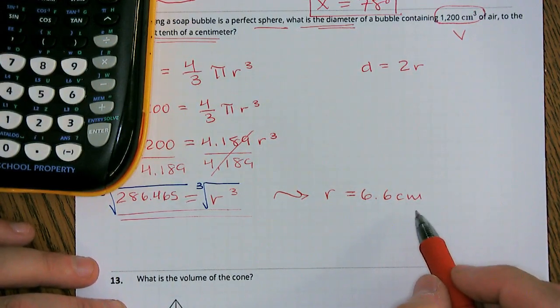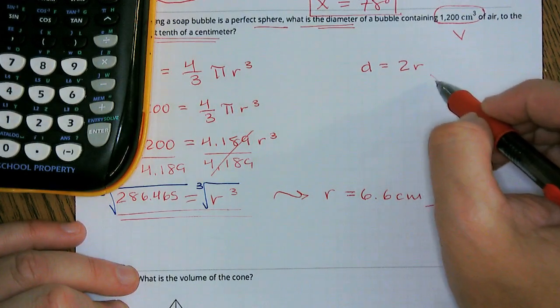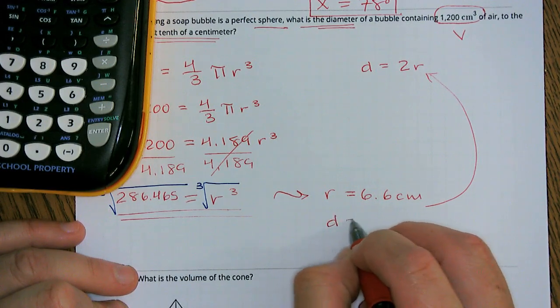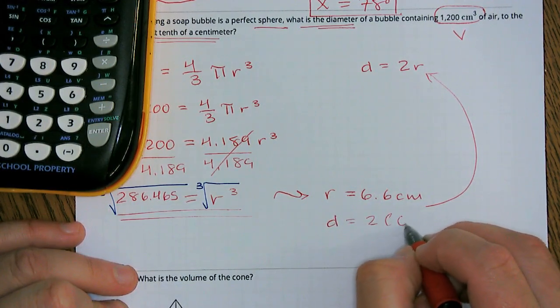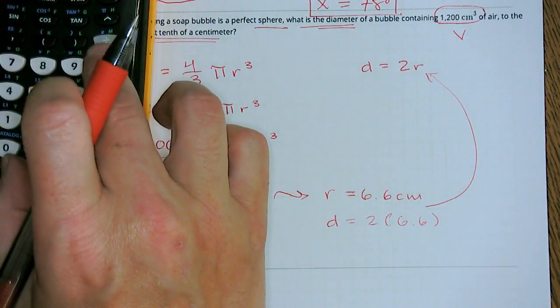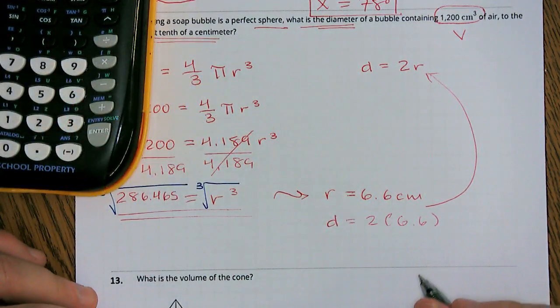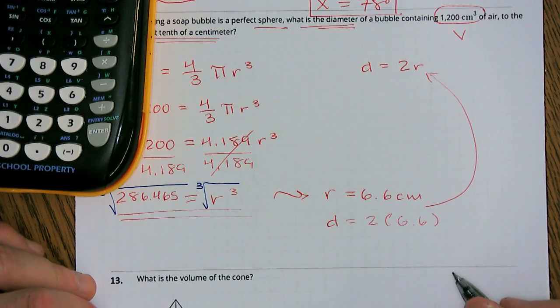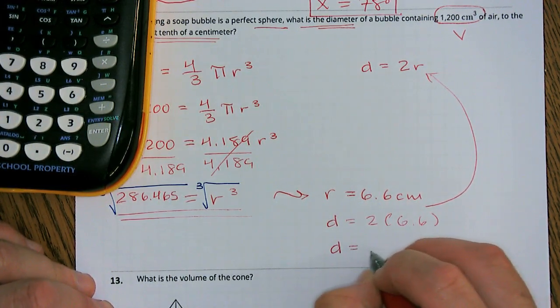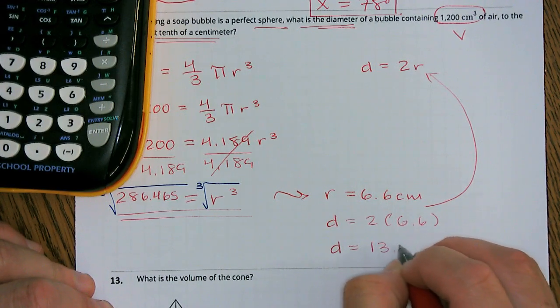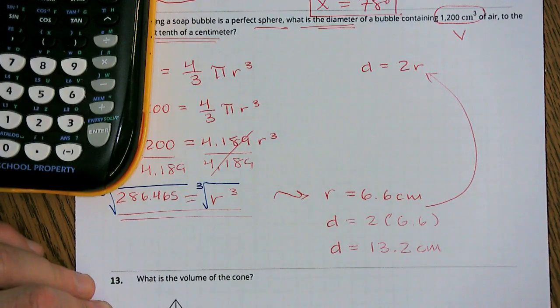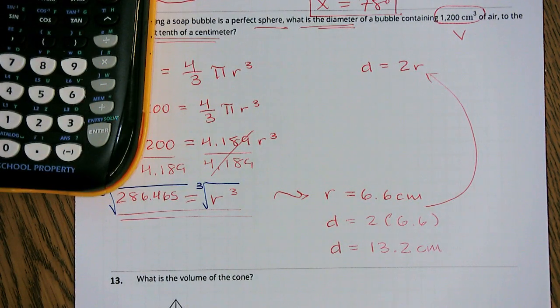But we haven't answered our question yet because remember, we're trying to figure out our diameter. So we have to double that. So our diameter is 2 times that 6.6. So if we multiply that by 2, we're going to get approximately 13.2. So our diameter is 13.2 centimeters.